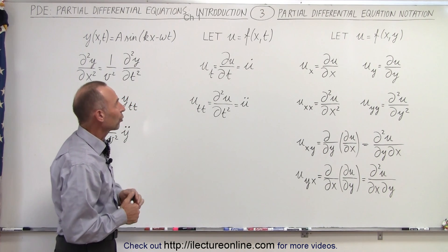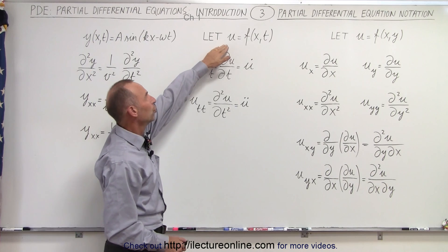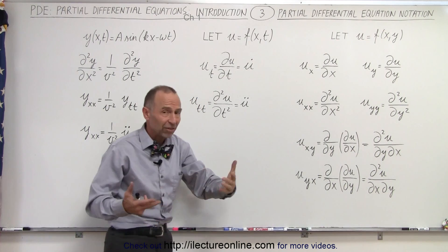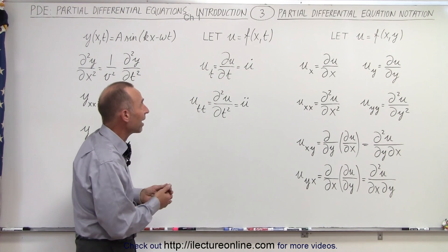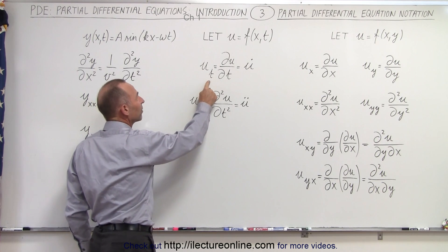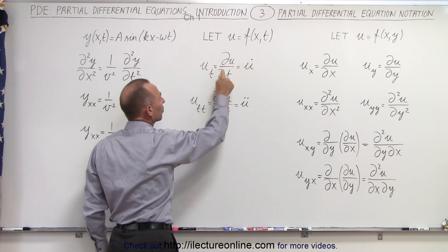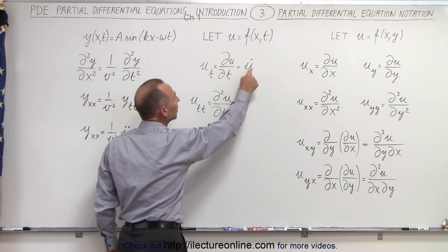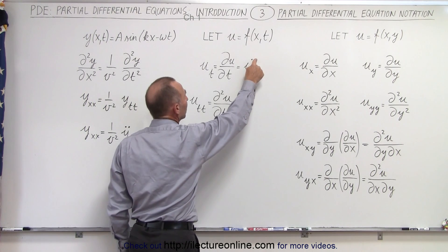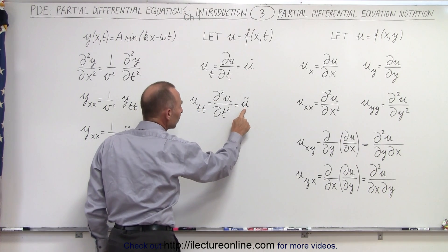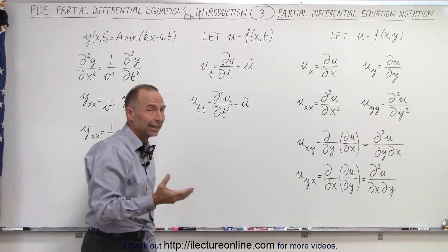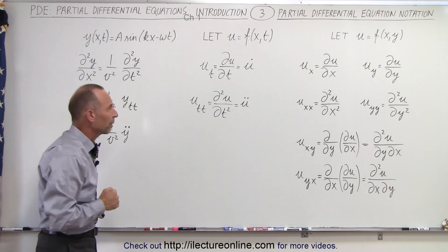We can also use this shorthand when we have a function u dependent on two independent variables x and t, where x could represent distance and t could represent time. When t represents time and you take the partial derivative of the function with respect to time, you could write it as the partial of u with respect to t, or u with a little dot over it. A dot over u means the first derivative with respect to time, and two dots means the second partial derivative with respect to time.